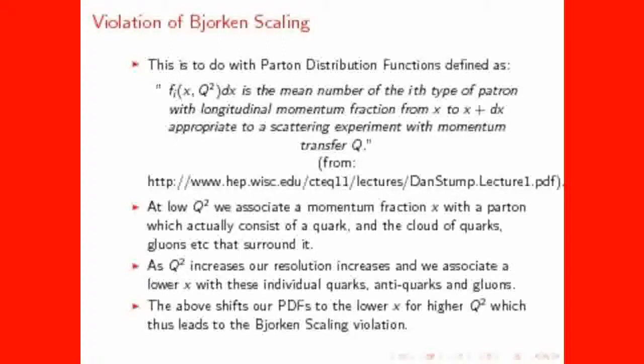The violation at low and high x can be described in terms of these things called parton distribution functions. These can be described as the mean number of the ith type of parton with longitudinal momentum fraction from x to x plus dx, appropriate to a scattering experiment with momentum transfer Q. By appropriate to a scattering experiment with momentum transfer Q, we mean when using a probe beam with this momentum transfer.